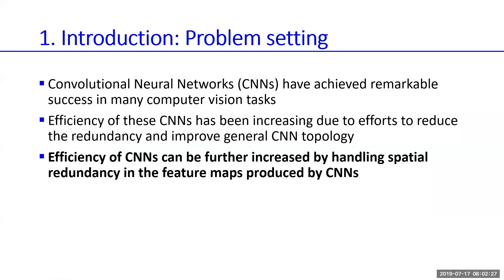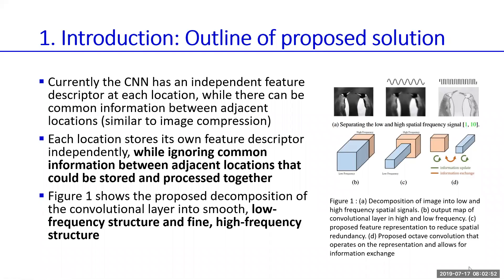CNNs are very successful, and several architectures have been developed to increase accuracy and reduce redundancy in calculations. This paper proposes a new form of convolution to handle spatial redundancy in feature maps. Think of it like image compression — features can be high frequency or low frequency, and processing them the same way uses a lot of unnecessary memory.